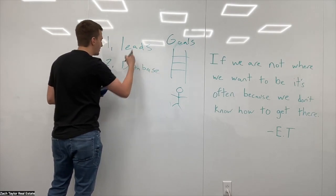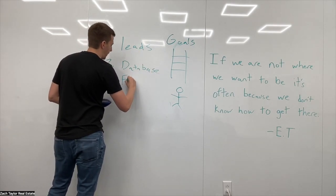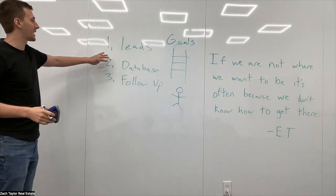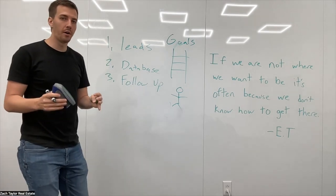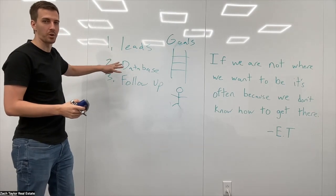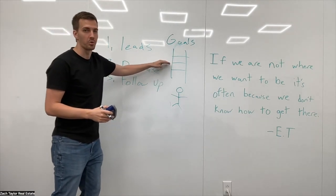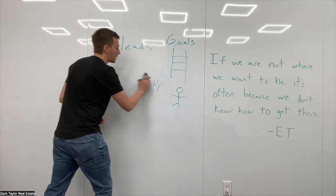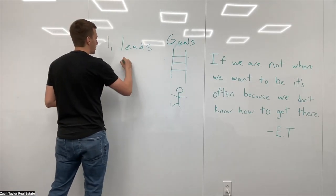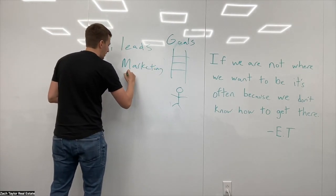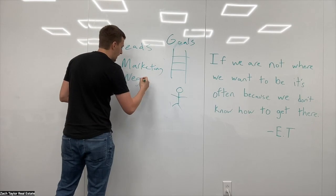It starts with leads, your database, and following up. And these are three big categories, but it kind of helps build the framework of the foundation and knowing, well, where are we struggling within these subcategories that's preventing us from hitting our goals? So number one is leads. So with leads, there's really kind of two sides to leads. There's marketing and there's negotiating, sales.